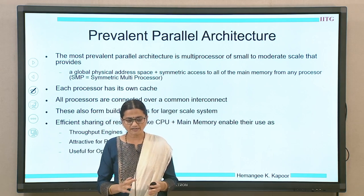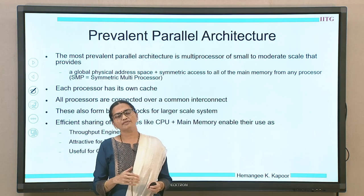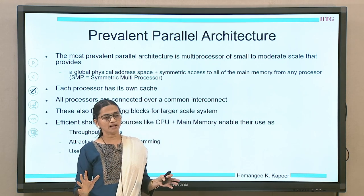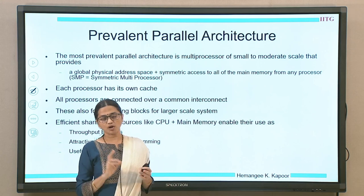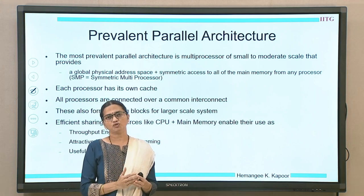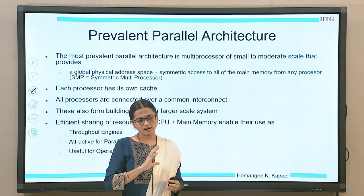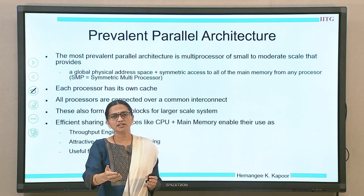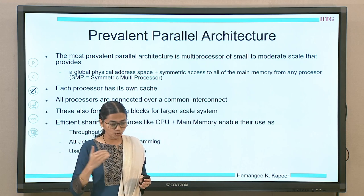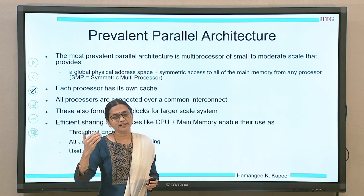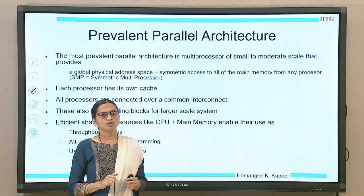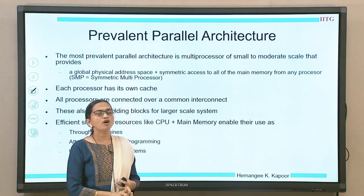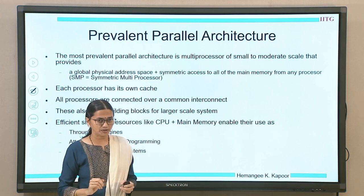We also have other types of architectures with non-uniform access and so on. In this setup, each processor has a cache of its own, and once a processor and a cache form a module, it is connected to the interconnect and through that interconnect it accesses the memory. All these processors are connected over a common interconnect and form building blocks of a larger system.